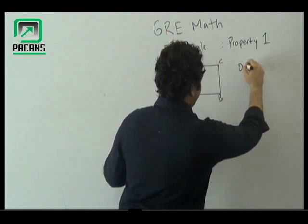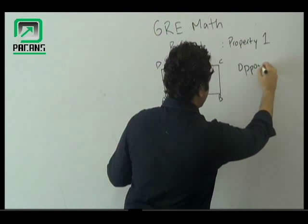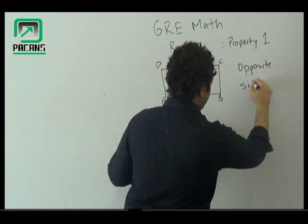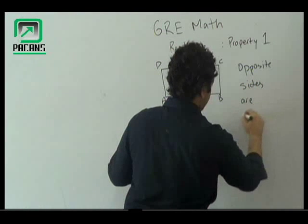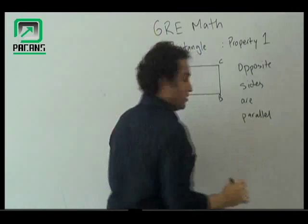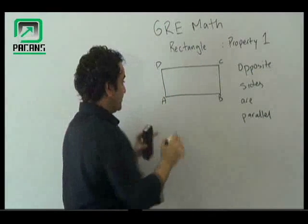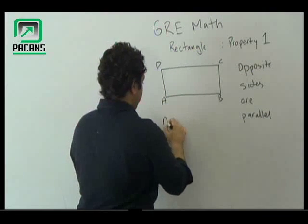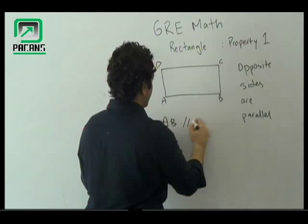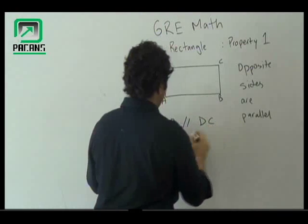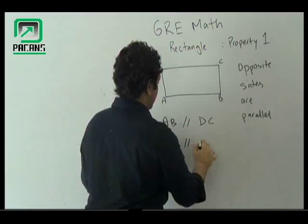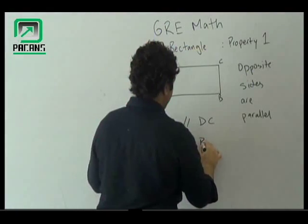I'll write it down over here. Opposite sides are parallel, which means that AB is going to be parallel to DC, and AD is going to be parallel to BC.